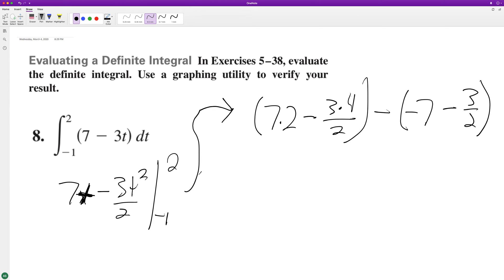So we end up with 14 minus 6, which is 8. This is 12 over 2, so it's 6. And this becomes negative 7 minus 3 halves, which is the same thing as negative 8.5, so it becomes plus 8.5.